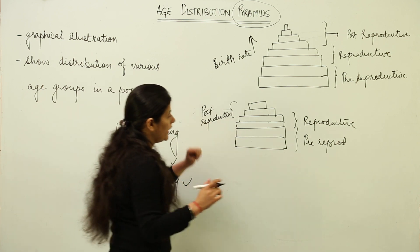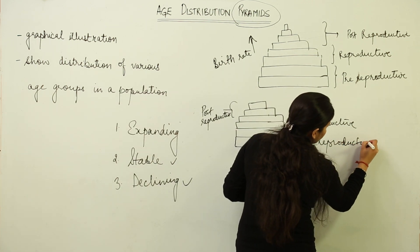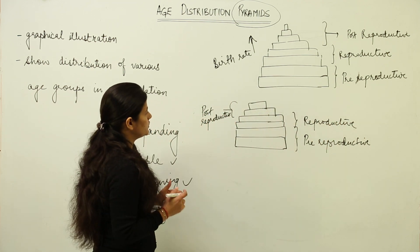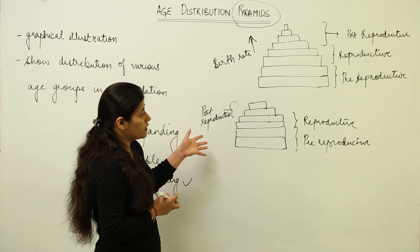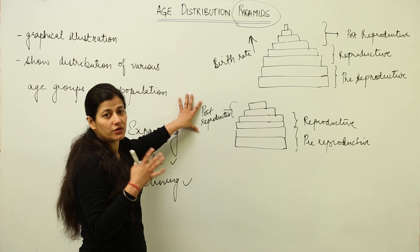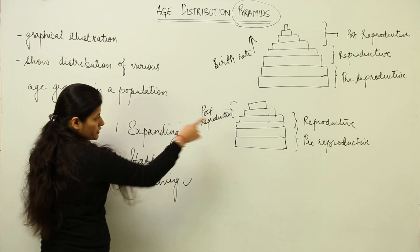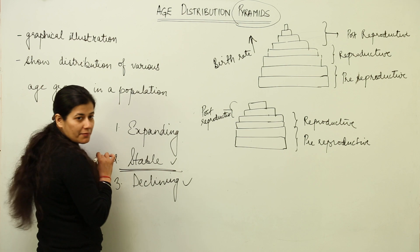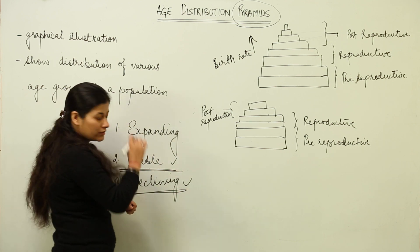This is the stable population age distribution. The countries which are developed — like the USA and Australia — those that have enough resources but are keeping a check on their population, fall into this category where their population is stable.